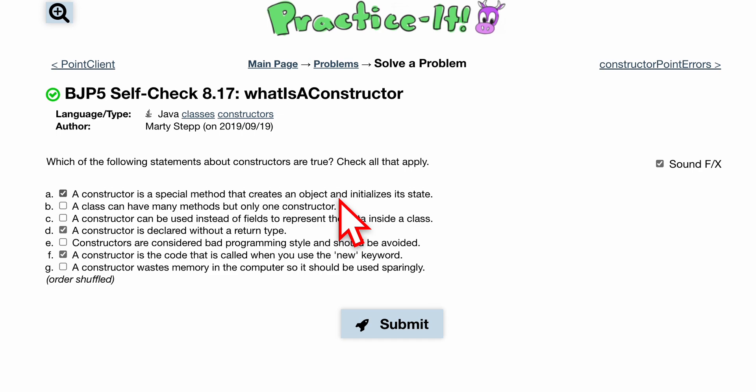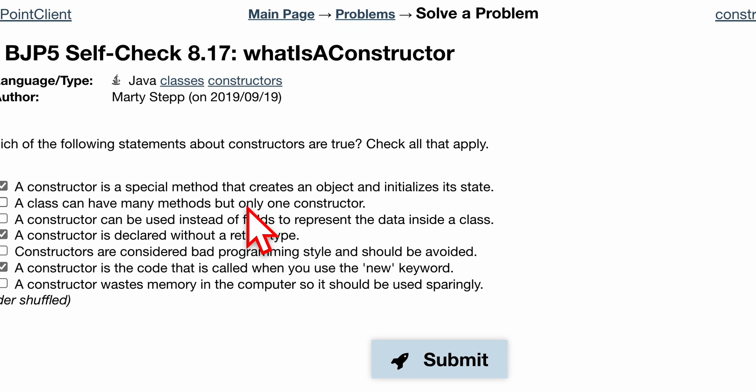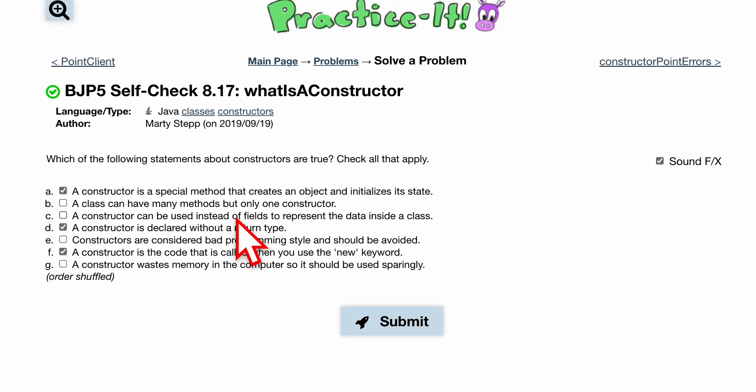Let's look at the following. We want to check all that apply. Option A: a constructor is a special method that creates an object and initializes its state. This is going to be true because it is a special method; it's the first one that's called and it creates an object and sets the variables.